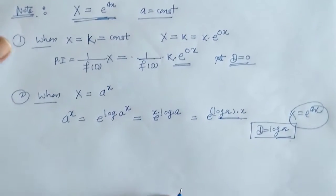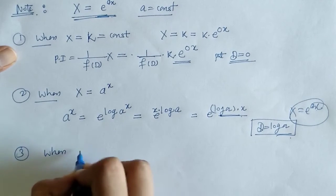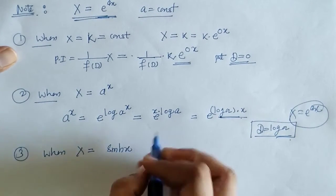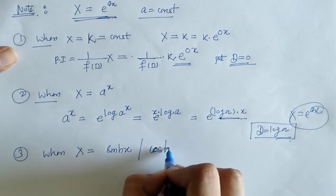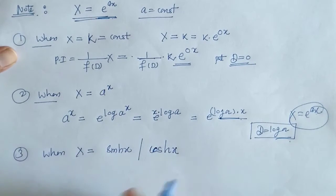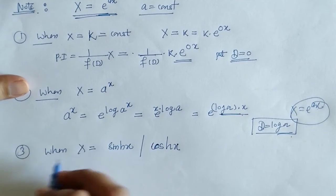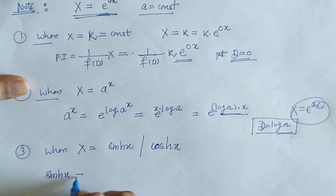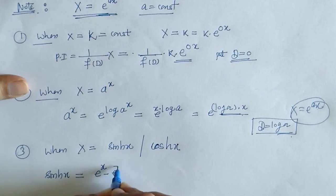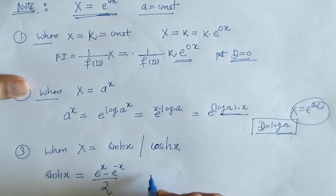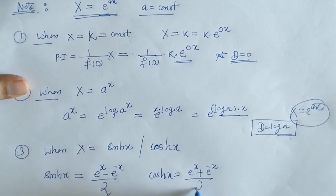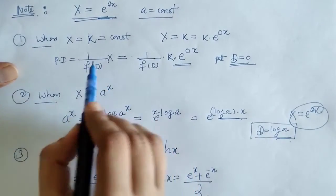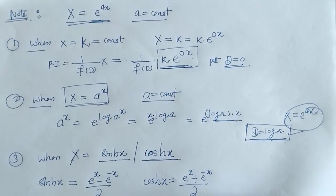Next, when X is hyperbolic sine or hyperbolic cosine, we use the formulas: sinh(x) = (e^x − e^(−x))/2 and cosh(x) = (e^x + e^(−x))/2. We reduce these to exponential form and apply the rule. We need to note down all three of these results. Let's now have a look at some examples.